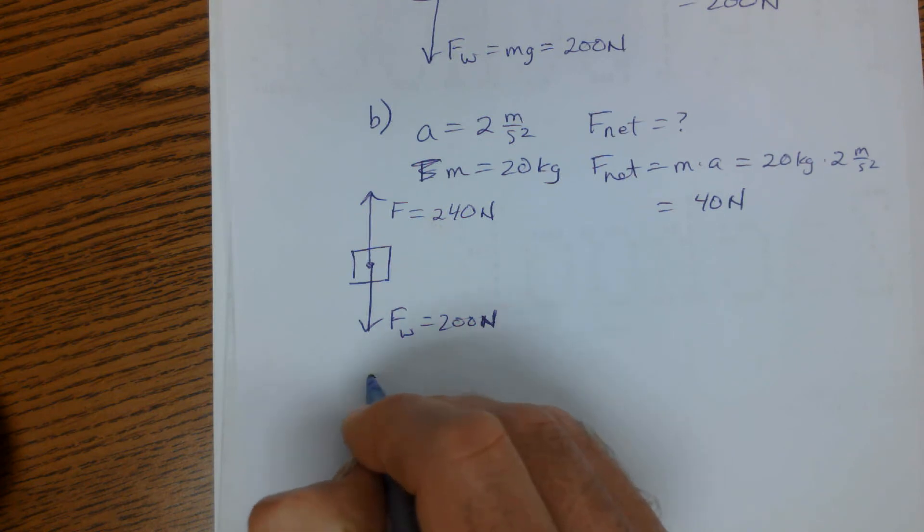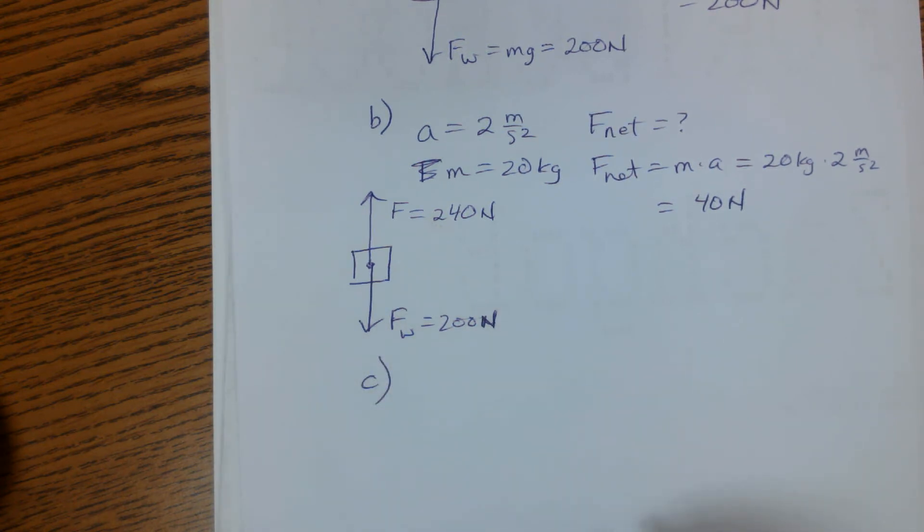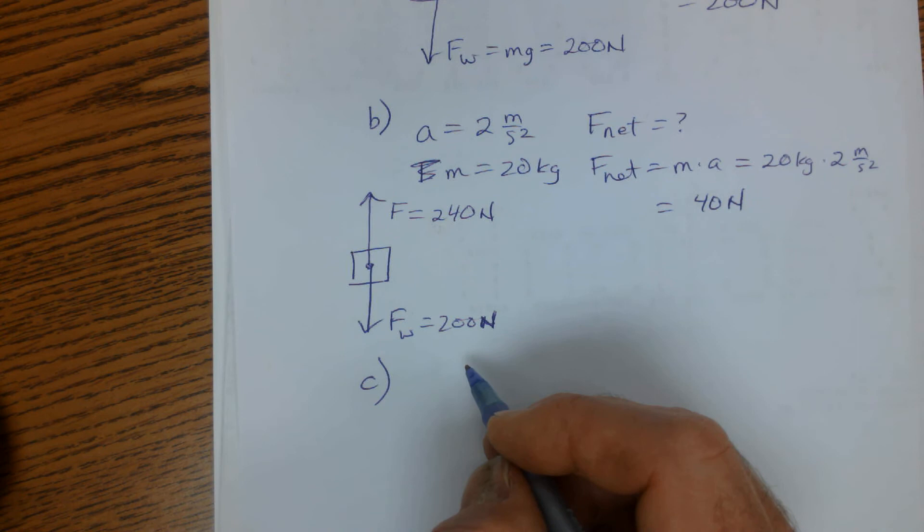And then finally, for part C, we want to know what does it have to be to give it a downward acceleration of 2 meters per second squared?